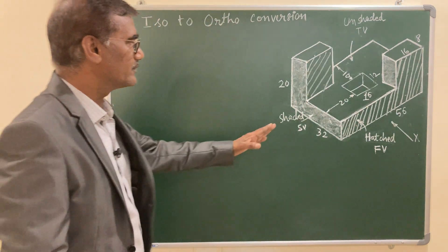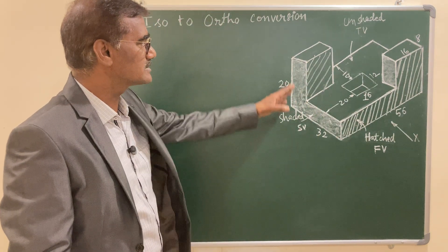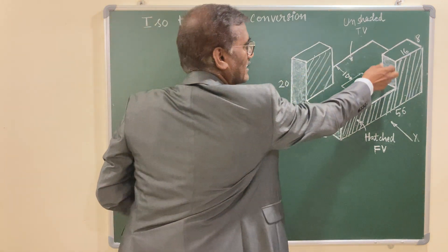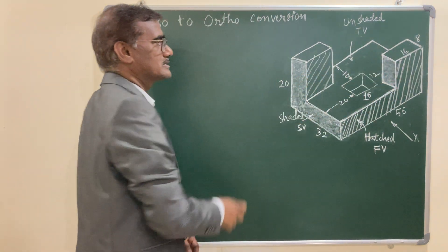And in side view, that is left side view, you can see that the shaded view appears this L shape and one rectangle shape. These two appear in side view.